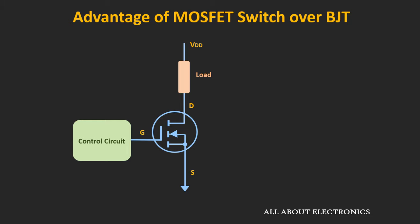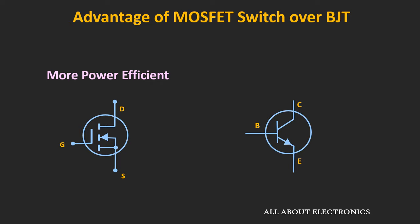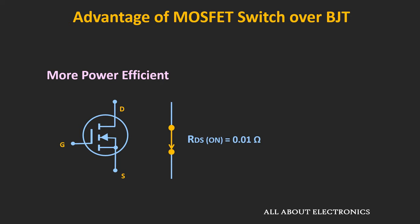For continuous switching applications, MOSFETs are more power efficient than the BJT. When the MOSFET is in the ON condition, it acts like a resistor, and the drain-to-source resistance will be very low. For high power MOSFETs, it is typically in the milliohms. So even at very high currents, the conduction loss in the MOSFET is comparable or slightly higher than the BJT.